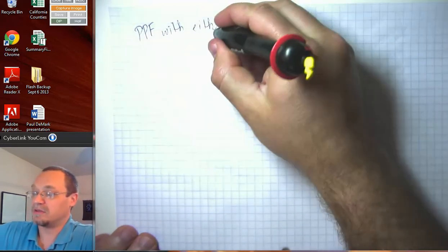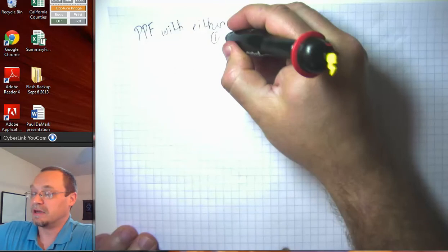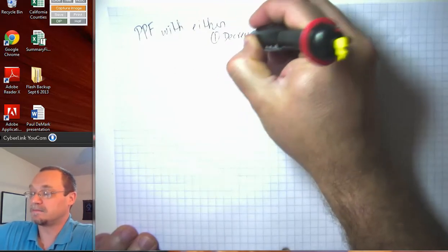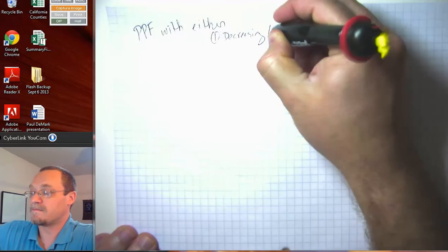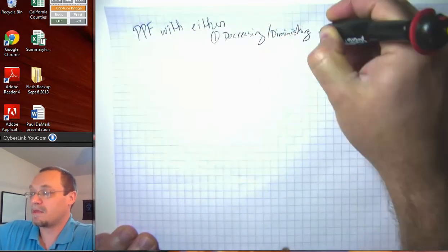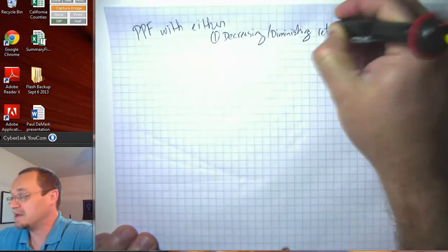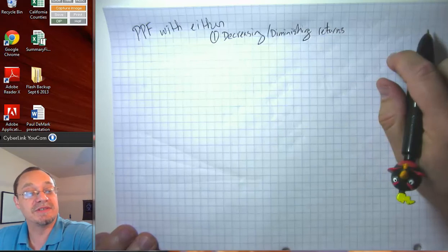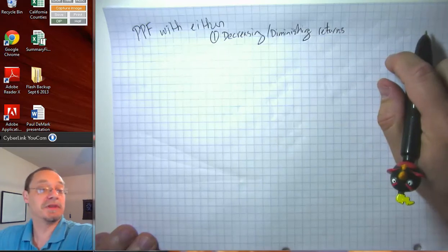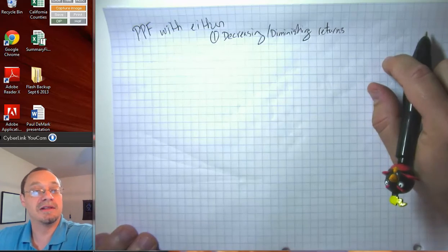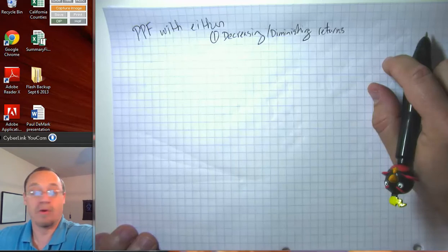One assumption might be that we have what's called decreasing or diminishing returns. So the idea here is decreasing or diminishing returns describes a situation where when you first start doing something, you get a lot of bang for your buck, and then later on you get less and less productive or less and less efficient as you do more of it.